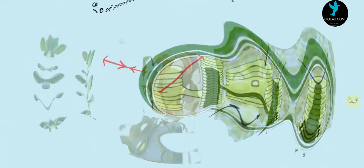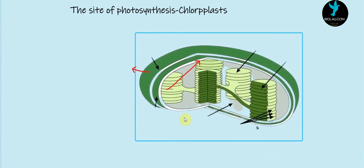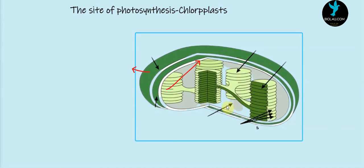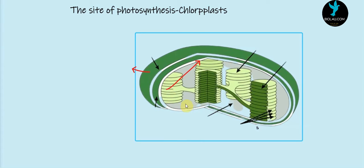Now let us study the structure of the individual chloroplast. Each chloroplast is surrounded by an envelope. This is the envelope of the chloroplast, and it is made up of two membranes — the outer membrane and inner membrane. A fluid-filled space is present inner to the envelope, and this fluid-filled space is known as the stroma or matrix.